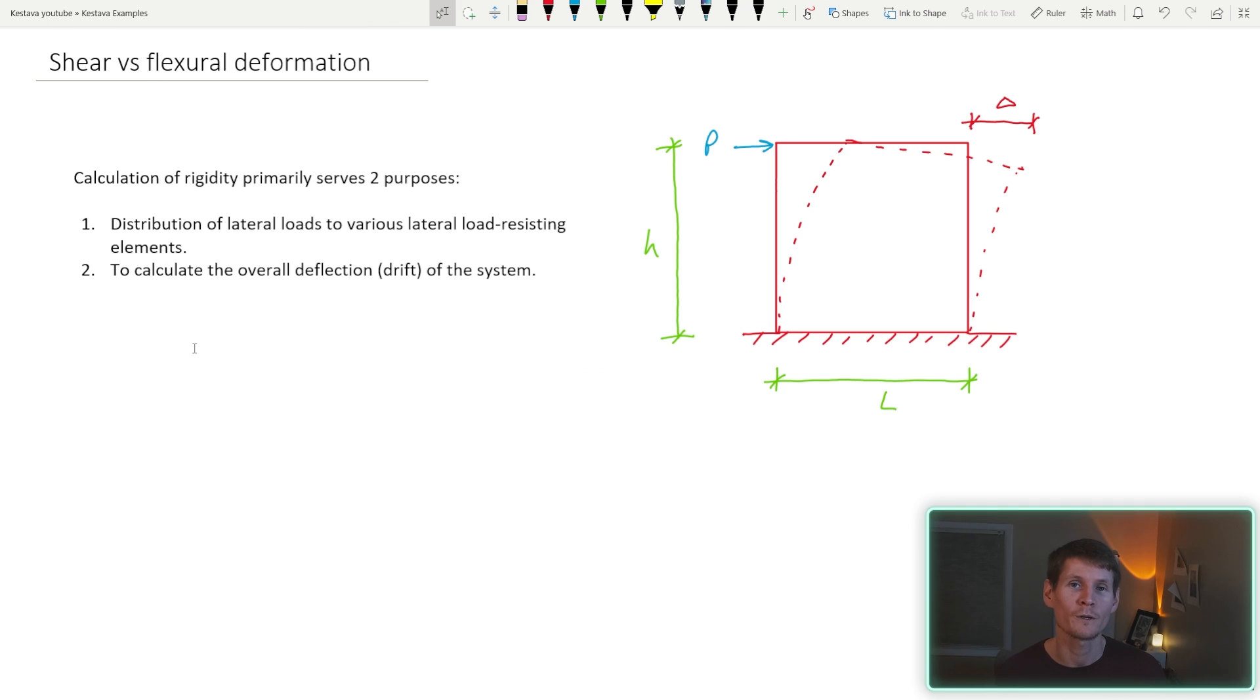And number two, the obvious point why most of you have probably clicked on this video, determining how much a system displaces or drifts. We remember that our total displacement is the following equation. The first part of the equation is flexural deformation component. And the second half is shear deformation component. And for today's example, we are going to be doing masonry.